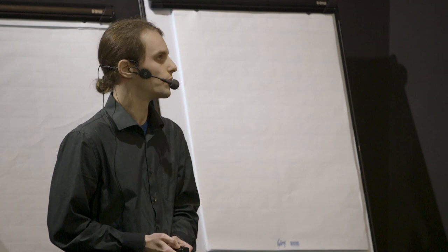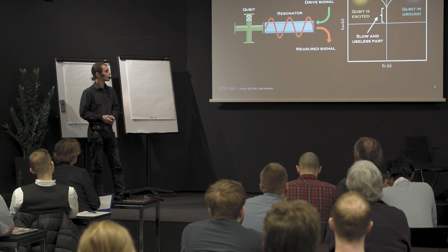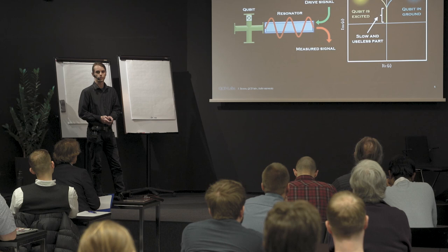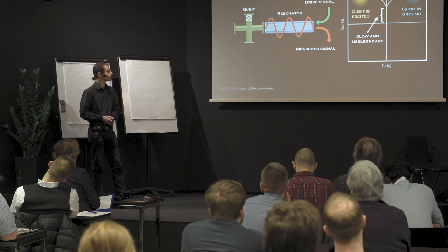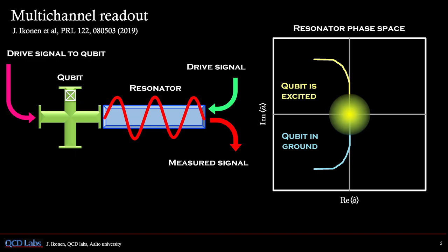This is standard stuff that people use to measure qubits all the time. But one drawback is this part where we have to pump the resonator to be full of photons. During this time, we can basically extract no useful information about the qubit because the distributions are overlapping. So here is our idea of how to get rid of this slow and useless part, which is what we did in this recent paper.